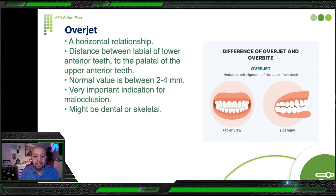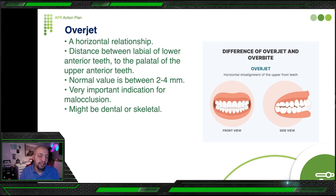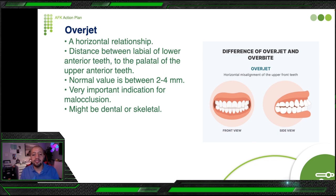Overjet is a horizontal misalignment of upper front teeth — a horizontal relationship between the palatal surface of upper anteriors and the labial surface of lower anteriors. Normal value is between 2 and 4 millimeters. Importantly, overjet is the distance between the upper centrals and lower centrals only — not all upper and lower anteriors. This matters when classifying Class 2 Division 1 versus Division 2.